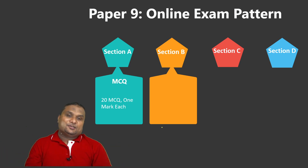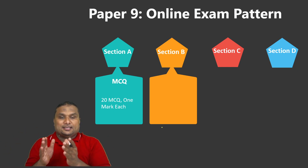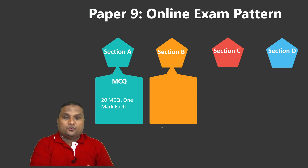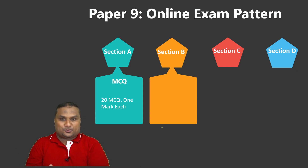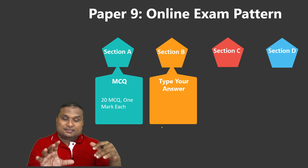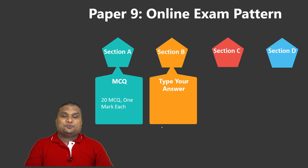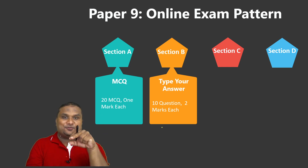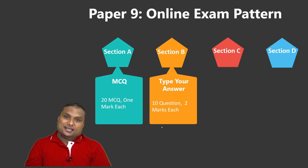When you practice multiple choice questions, those same questions can be converted into Section B format, where you type your answer and get two marks per question. There will be 10 questions in Section B — seven from Operations Management and three from Strategic Management.